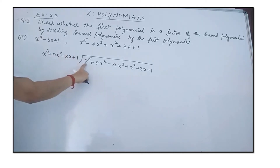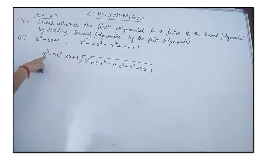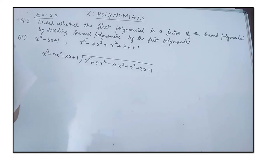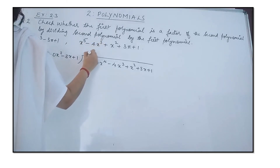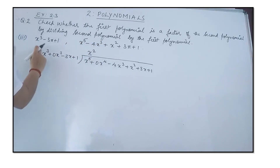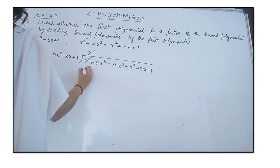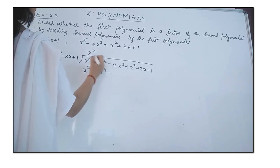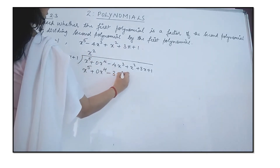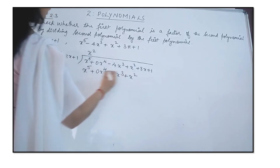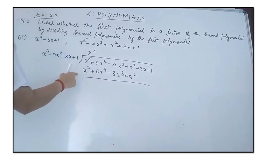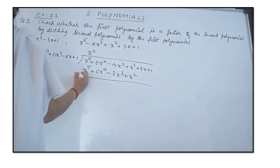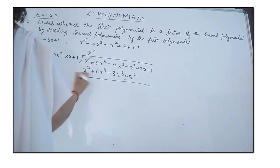We check the first term of the dividend against the first term of the divisor: x⁵ divided by x³ gives x², which is written in the quotient. Multiplying x² with the whole divisor gives x⁵ + 0x⁴ − 3x³ + x². Now subtracting, the signs change to negative.